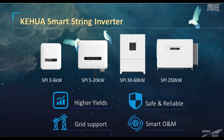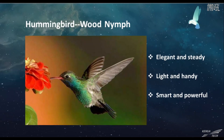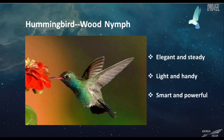Let's come to today's leading role, the Hummingbird SPI-20K inverter. Let's take a look at this picture. A beautiful hummingbird is hovering steadily in the air to collect nectar. Hummingbird also has a beautiful name called Wood Nymph. It is nimble and responsive, has an elegant appearance, and strong wings to ensure stability of flight control — truly a masterpiece of nature. The SPI-20K series inverter, as the masterpiece of Keihua engineers, shares these similarities: elegant and steady, light and handy, smart and powerful. That's why we call it the Hummingbird inverter, designed to be nature.